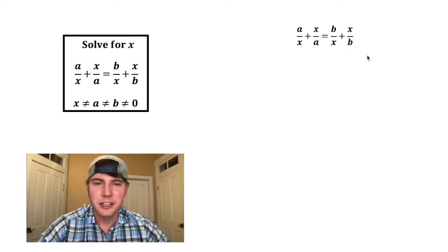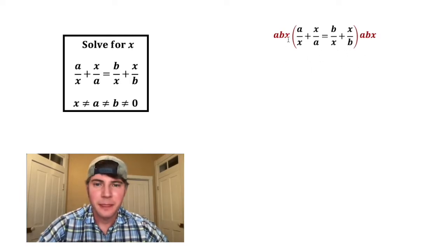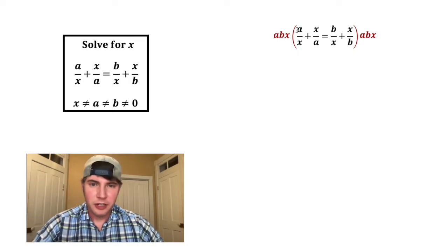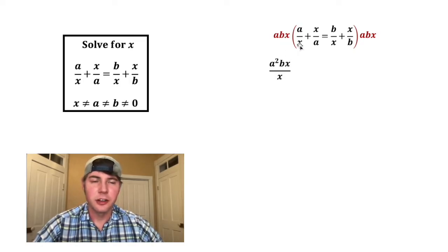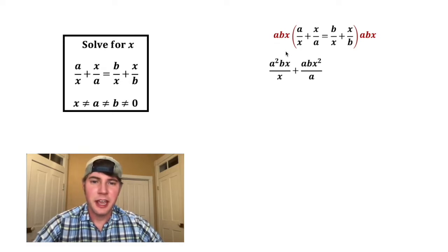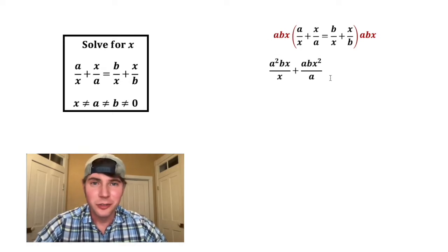I want to get rid of the denominator, so I'm going to multiply everything by the least common denominator. That is a times b times x. So a times a is a squared, and then we still have the bx, and it's still over x. And then abx times x ends up being abx squared, and it's still over a.